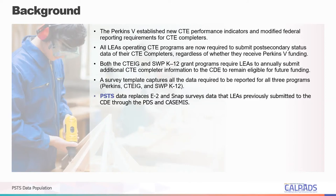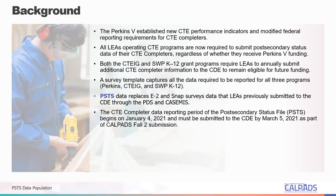The PSTS data replaces the E2 and SNAP surveys data that LEAs previously submitted to the CDE through the Perkins Data System, or PDS, and the California Special Education Management Information System, or CASEMIS. With regards to the submission timeline, the CTE completer data reporting period of the post-secondary status file begins on January 4, 2021, and must be submitted to the CDE by March 5, 2021 as part of the CALPADS Fall 2 submission.